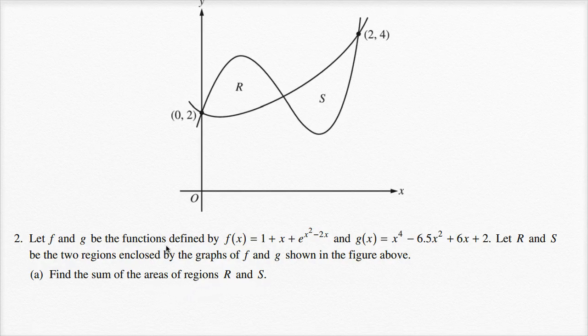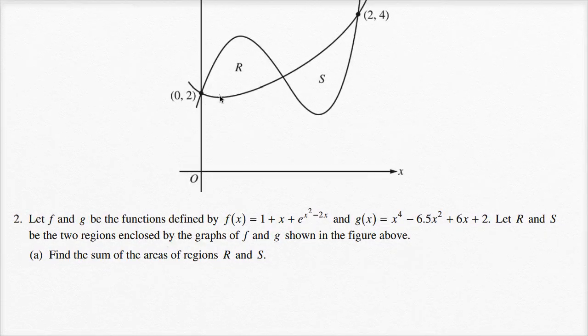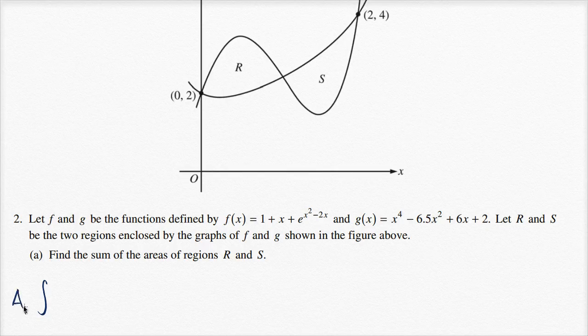So the sum of those areas—we're going to go from x = 0 right over here to x = 2. So we're going to take the integral from x equals—let me write this down. Area of R plus S is equal to—let me write that a little bit neater. So the area of R plus S is going to be equal to,